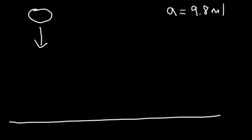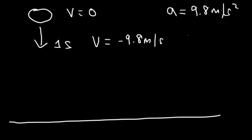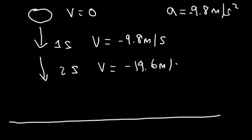Now let's talk more about the acceleration due to gravity. If we have a ball and release it, it's going to fall down and accelerate at 9.8 meters per second squared. Acceleration tells you how fast the velocity is changing every second. Initially the speed is zero; one second later the velocity is negative 9.8. Speed is always positive, but velocity can be positive or negative depending on direction.